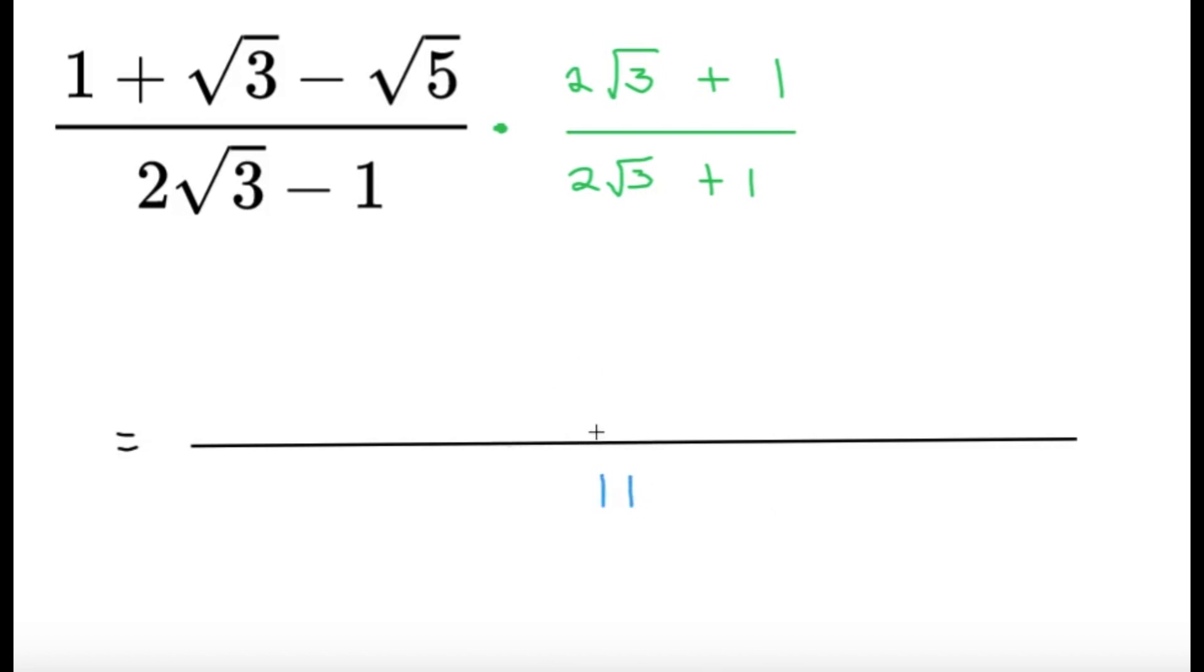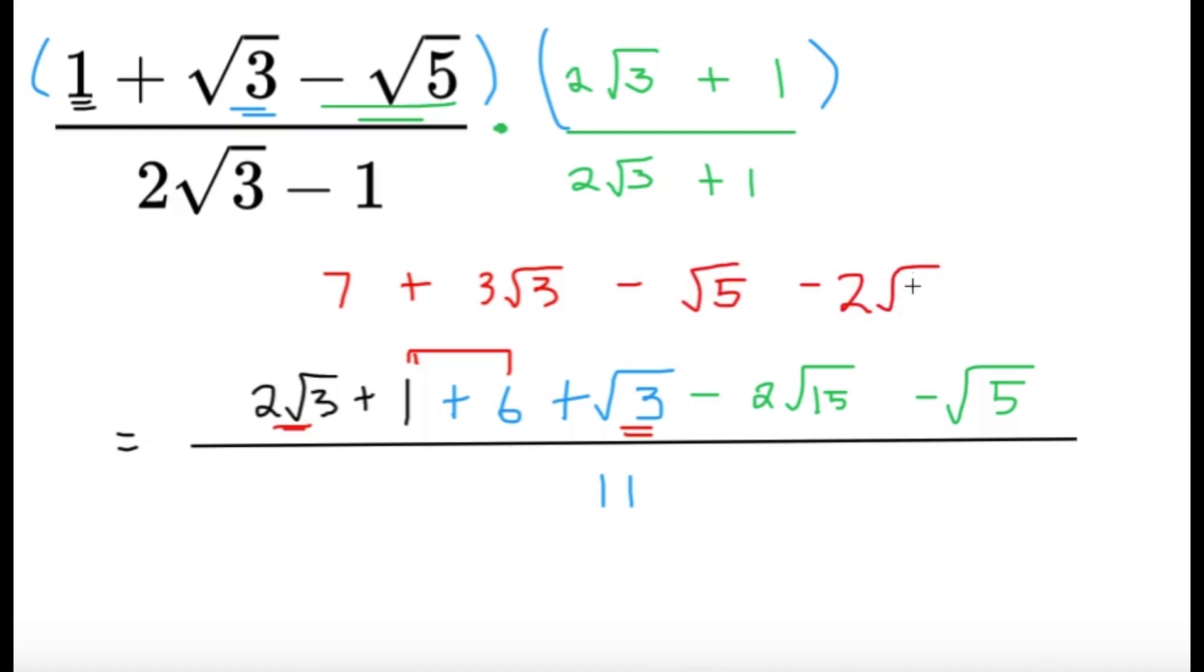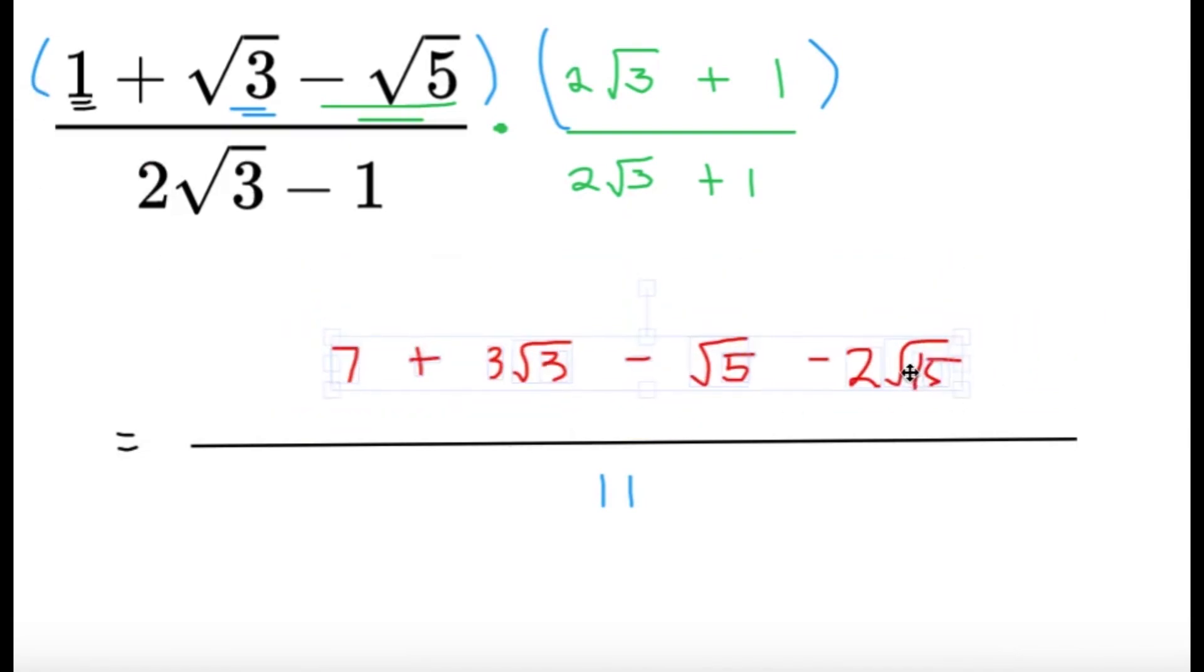Now let's focus on the numerator now. We have to distribute. We have to multiply this and that. So let's multiply 1 and distribute it to this. Distributing 1, we're going to get 2 square root of 3 plus 1. Now next, distributing the square root of 3, it's going to become plus 6 plus square root of 3. And lastly, distributing the minus square root of 5 over here, it's minus 2 square root of 15 minus square root of 5. Now let's collect like terms. The 1 and the 6 here become 7. So we have 7 so far. And then the 2 square root of 3 and the square root of 3 here gives us 3 square root of 3. And the other 2 over here, it's already in simplest terms. So we have this. So I'm just going to remove this for now.